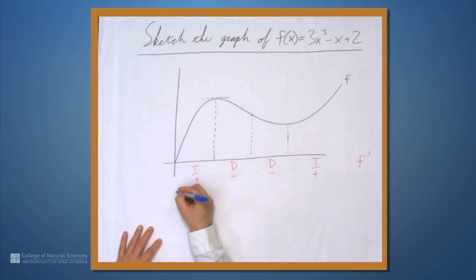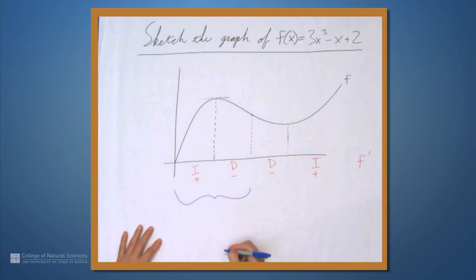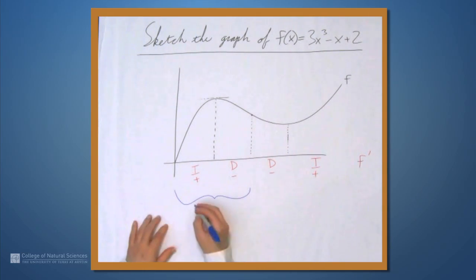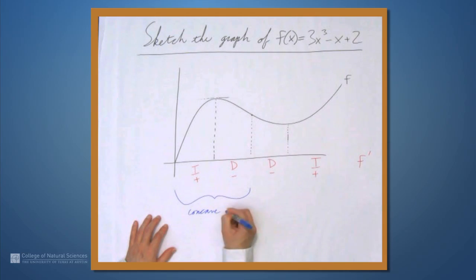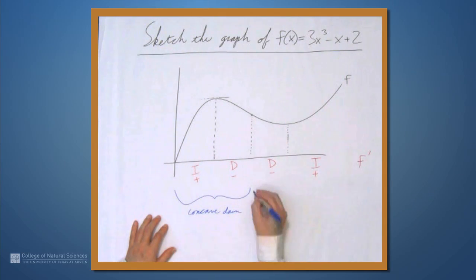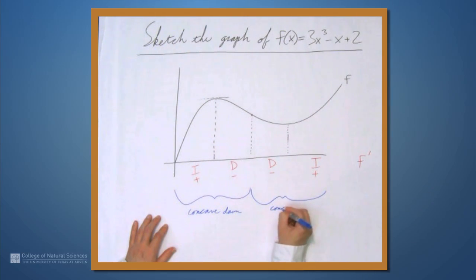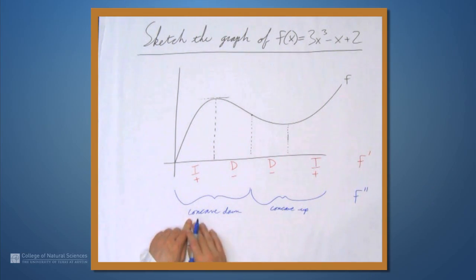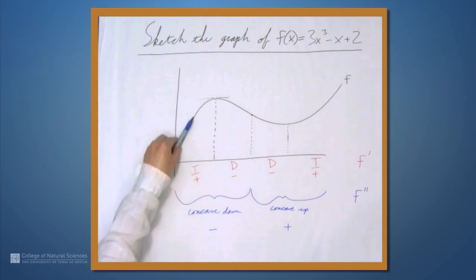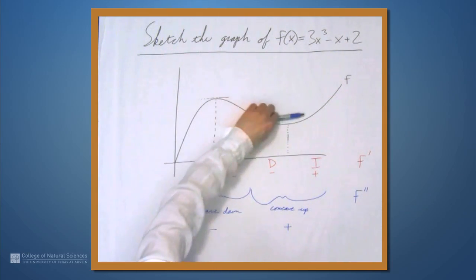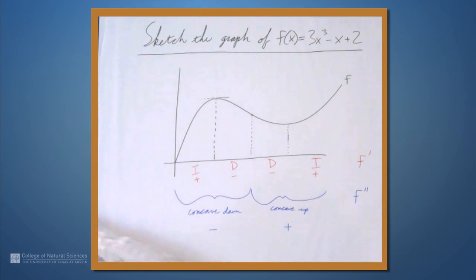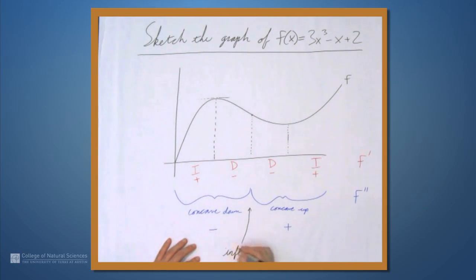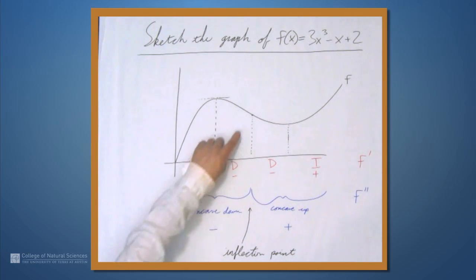We also have the consideration of concavity. On the first part, up until the inflection point, this is concave down. After the inflection point, it is concave up. These are determined by f'': concave down means f'' is negative, concave up means f'' is positive. The rate of change of the slope is decreasing then increasing — negative then positive. The inflection point is right in the middle, where the concavity changes.